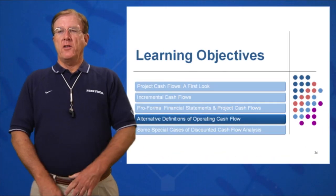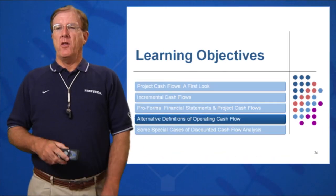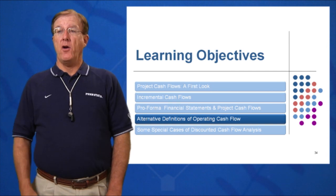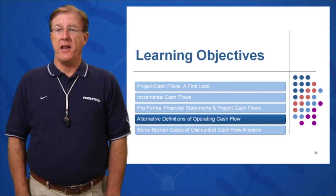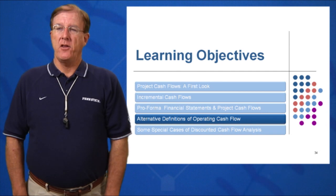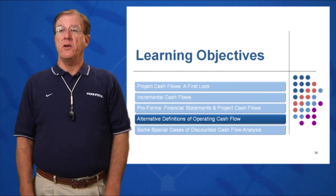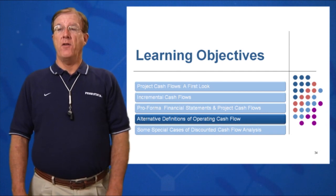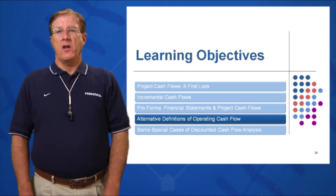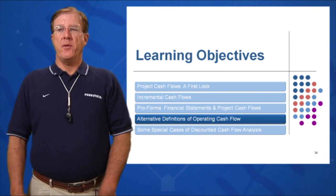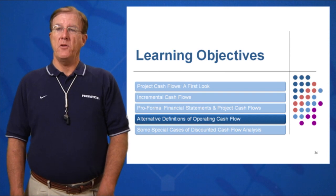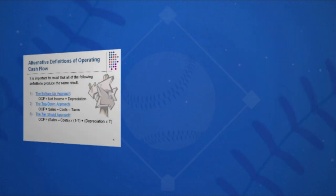For Learning Objective 4 in Session 10, we want to look at alternative definitions of OCF — are there other ways to calculate it? If you have a full income statement, you can use these other three methods if there is no interest expense involved, because we treat that as a financing cost. So if it's a simple income statement with no interest expense, we can simply use other methods of OCF.